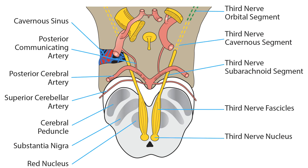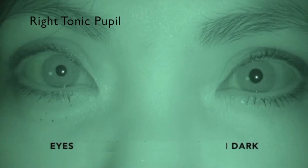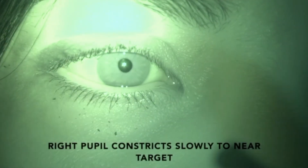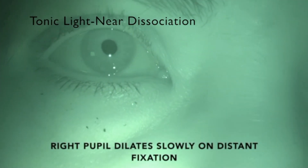Within the orbit, third nerve branches enter the extraocular and levator muscle bellies in their posterior portions. The parasympathetic part of the nerve extends farther forward to the ciliary ganglion, where it synapses and sprouts axons supplying the iris sphincter and ciliary muscles. The nerves to the extraocular muscles are not often damaged in the orbit, but the ciliary ganglion and its short ciliary nerves are vulnerable to orbital trauma and presumed autoimmune inflammation causing tonic pupil, which fails to constrict to direct light but constricts slowly to a near target — called tonic light-near dissociation.